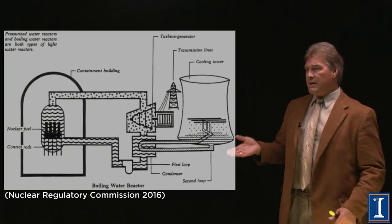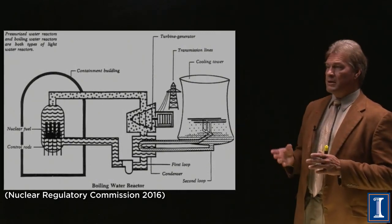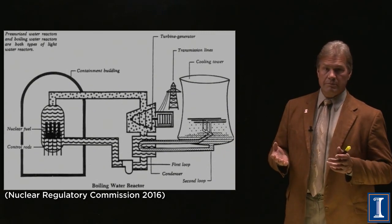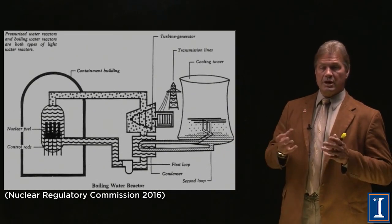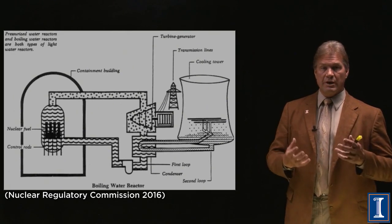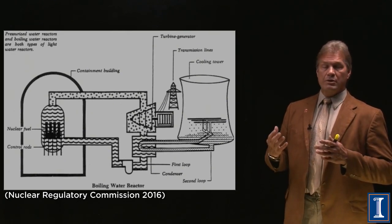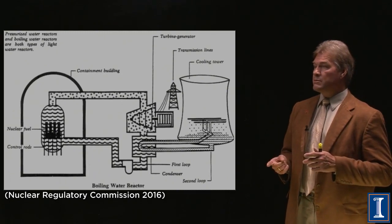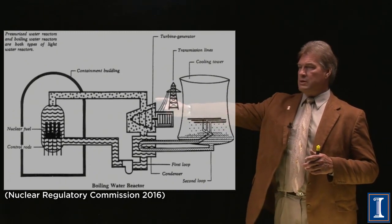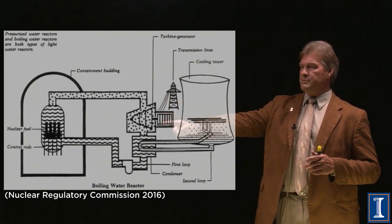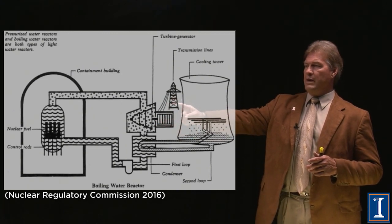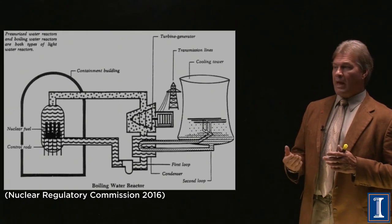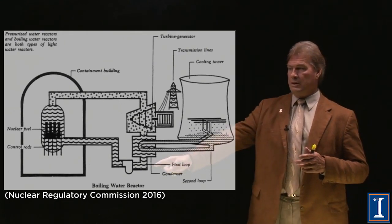Here is a nice stylized view. Water goes in; the moderator is also the coolant. The chain reactions occur, the fission products are very hot, the water cools them — which means the water heats up. It boils, it makes steam. The steam goes through the turbine, the turbine spins the generator, and the generator makes electricity.